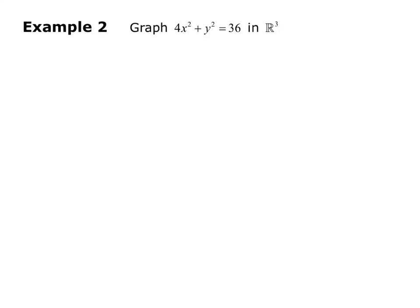Example two asks us to graph 4x² + y² = 36 in R³. Notice that there's no restriction on z, so it's going to expand up and down along the z-axis.